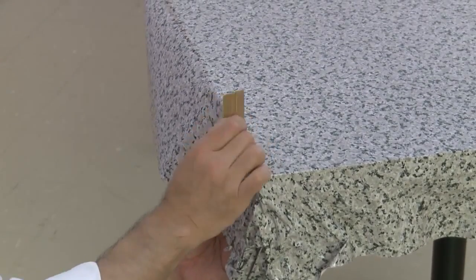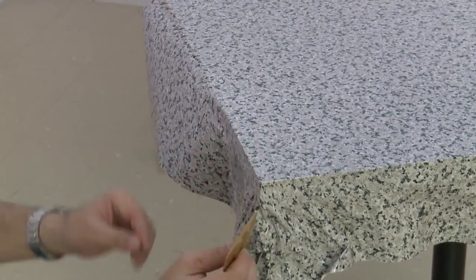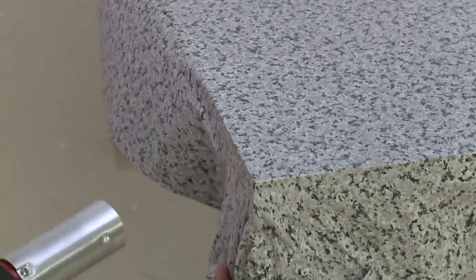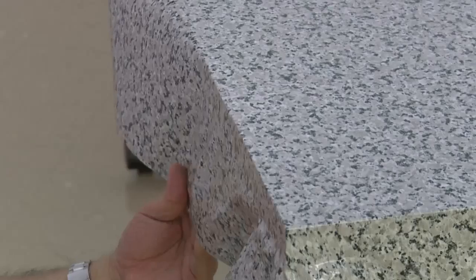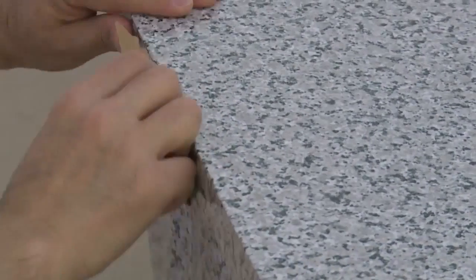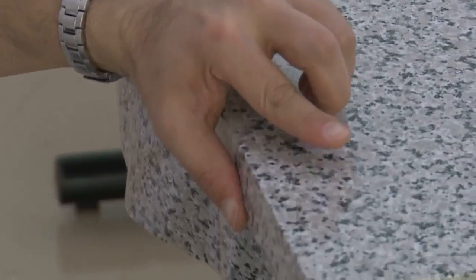Later, you'll see how to finish the bottom edges of the table. Use the heat gun as needed to keep the film warm as you conform it to the table's edge. Repeat the procedure for conforming the film to the other corners of the table.